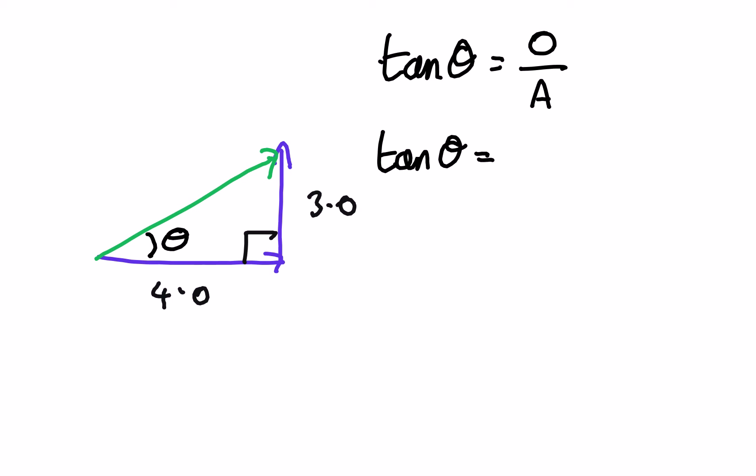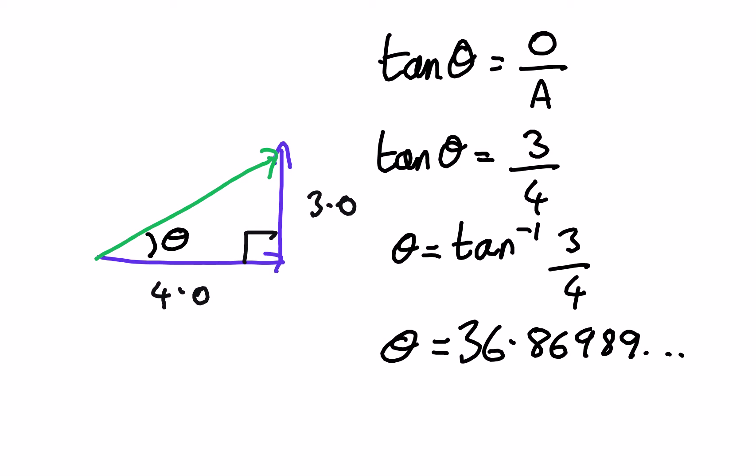So tan theta is equal to 3 over 4, and therefore theta is going to be the angle that has the tangent of 3 quarters. If I stick that into a calculator, it comes out as theta equals 36.86989, and because my original numbers are two significant figures, I'm going to give my angle to two significant figures, so theta equals 37 degrees.